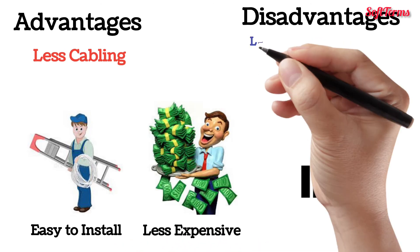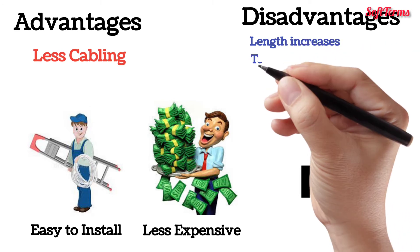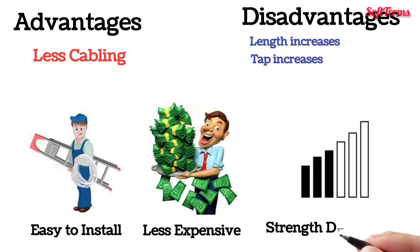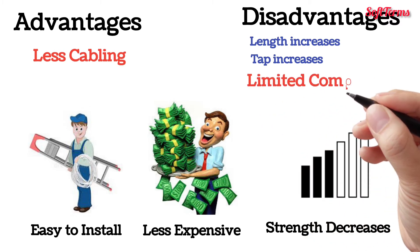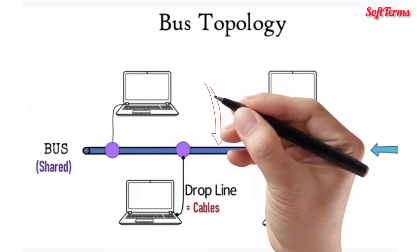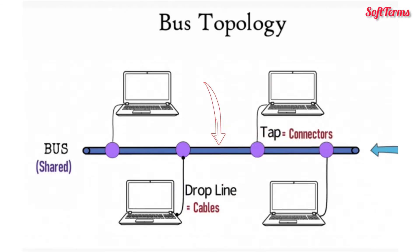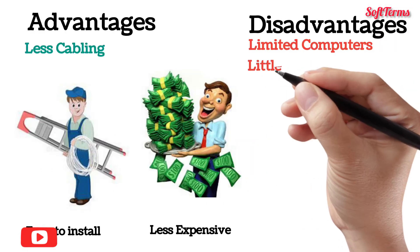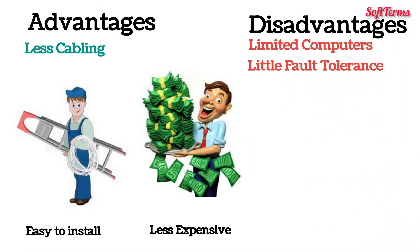However, with the increase in the length of the central cable and the increase in the count of taps, the strength of the signal decreases, so only a limited number of computers can be connected in a bus topology. All computers depend on the central cable for data frame transmissions, so if the central cable fails, it paralyzes the whole network. That is, bus topology has very little fault tolerance.